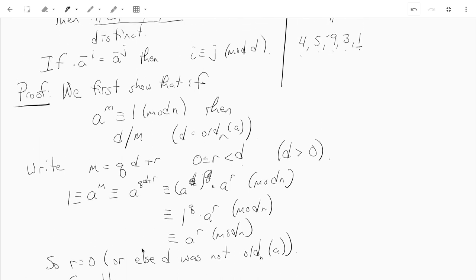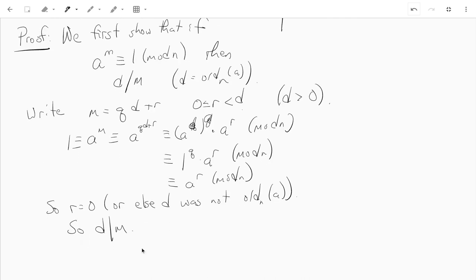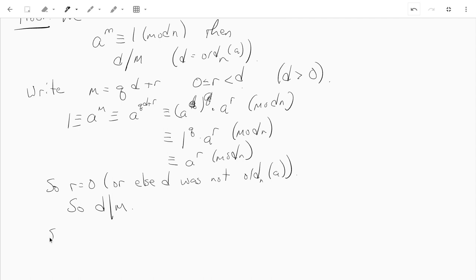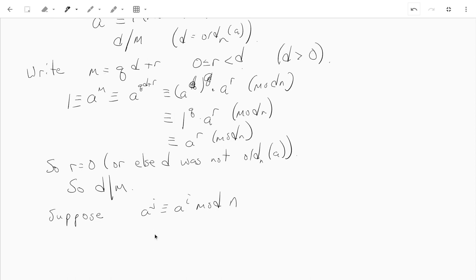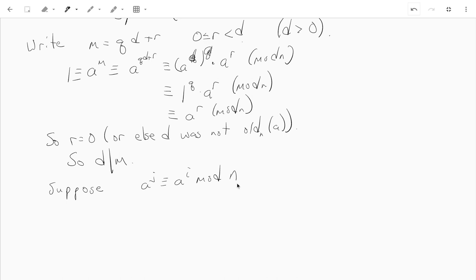So we've shown that if a to the mth is congruent to 1 mod n, then the order divides m. So now suppose that a to the j is congruent to a to the i. Since the GCD of a and n is 1, there's an inverse. We can multiply both sides by a to the minus i. So we can do a to the j times a to the minus i, and that's congruent to 1 mod n. And that's just the same as a to the j minus i. So a to the j minus i is congruent to 1 mod n. We just showed that if a to the something is congruent to 1, then d divides the something. So d divides j minus i. In other words, i is congruent to j mod d.